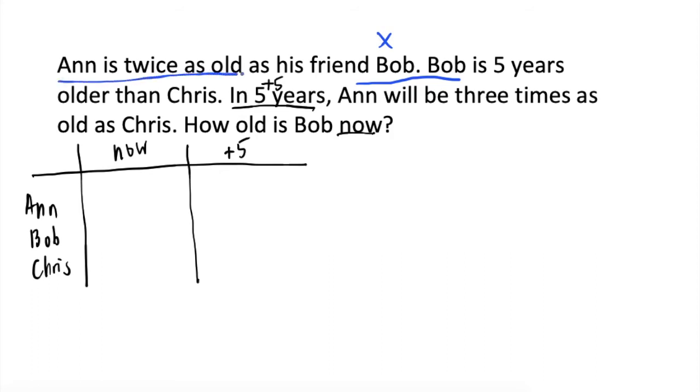Since Ann is twice as old as Bob, ang present age niya ay two times x or 2x. Bob is five years older than Chris. Or in other words, pwede natin sabihin na Chris is five years younger than Bob. So, ang present age ni Chris should be x minus five.